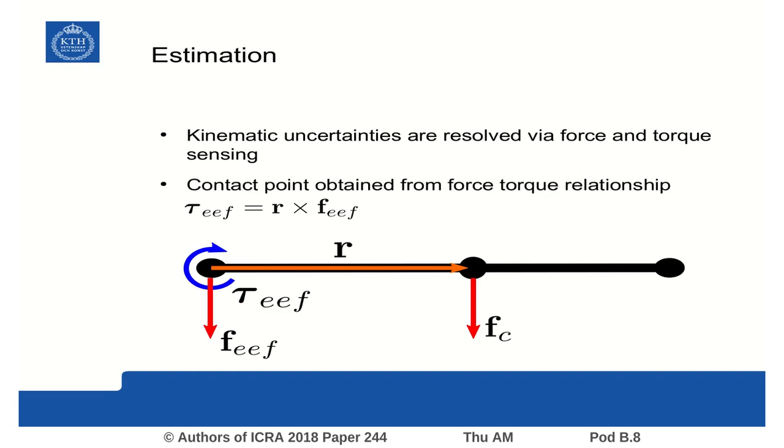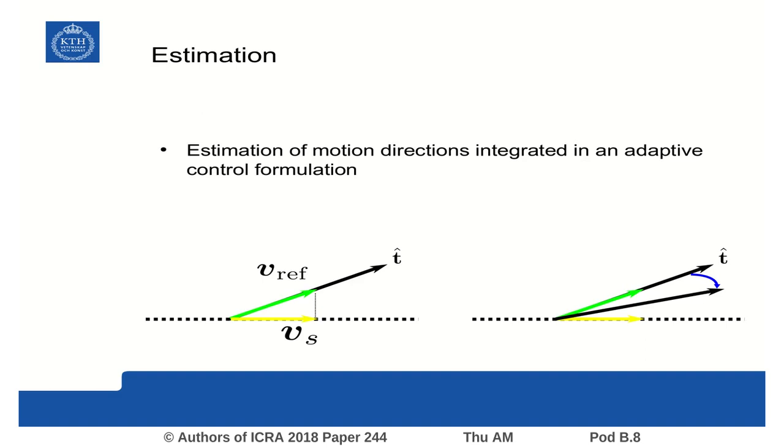To identify the geometric uncertainties, we rely on the force and torque sensing. The contact location between the mechanism parts is assumed to be the location of its joint. We rely on the relationship between torque and force at the end effector to identify this location, using a common filter estimator.